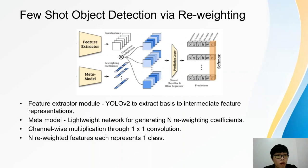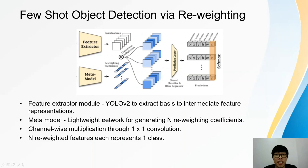The backbone of the feature extractor module is a YOLO-V2 detector to extract basic to intermediate feature representations, whereas the meta-module is a lightweight network for generating n reweighting coefficients, where n represents the number of classes for detection. The reweighting coefficients will be used to perform generalized modifications with the features extracted from the feature extractor through 1x1 convolutions.